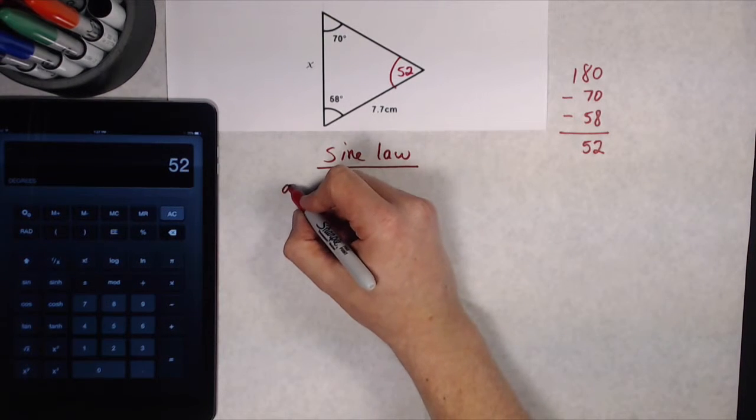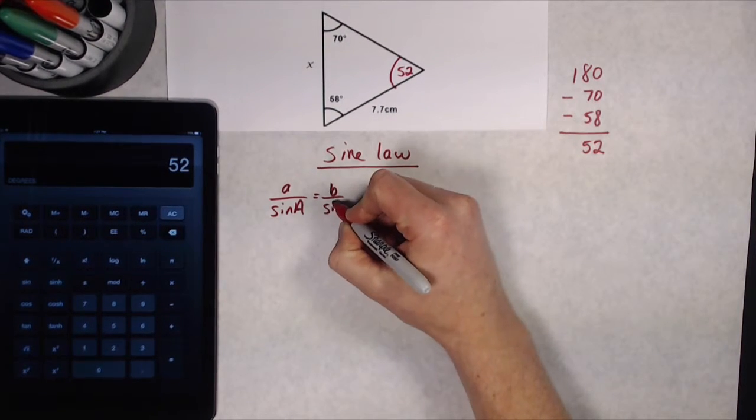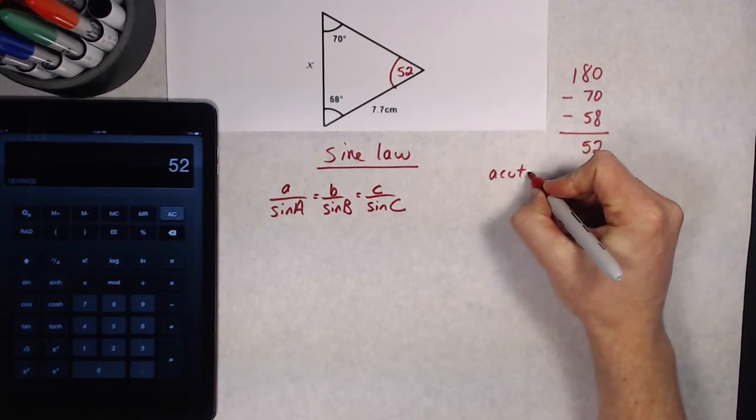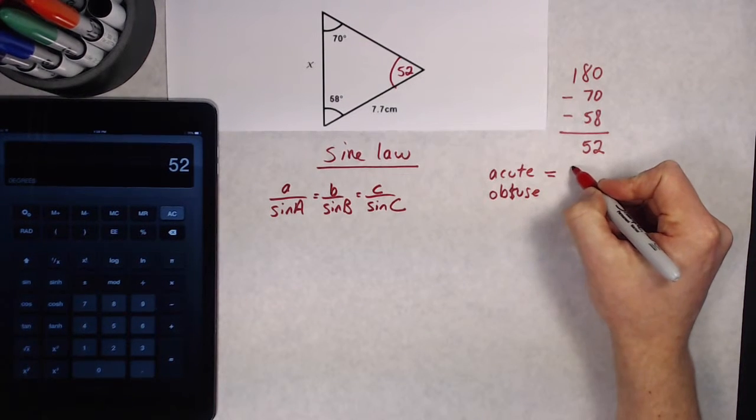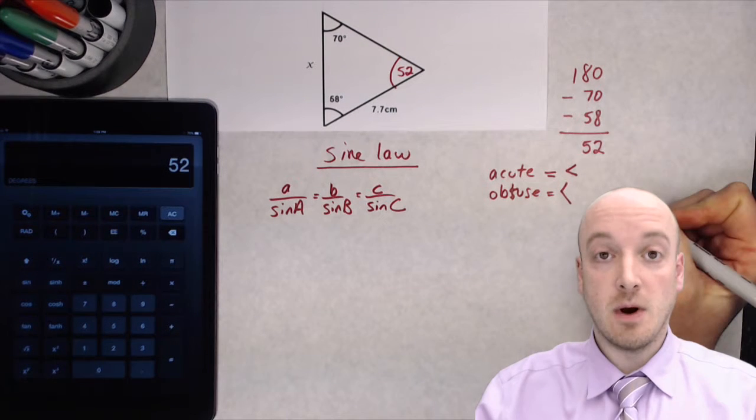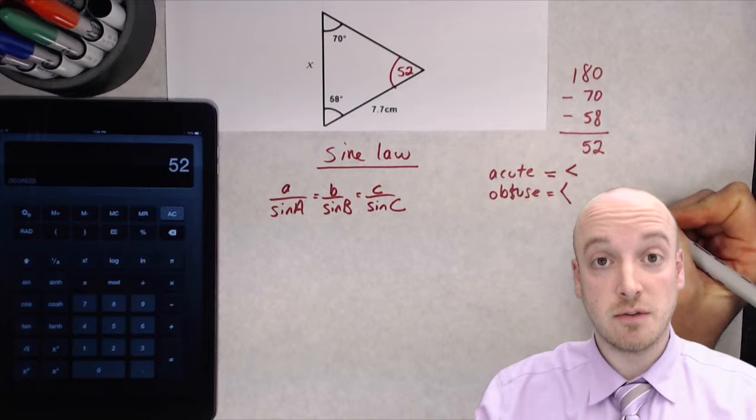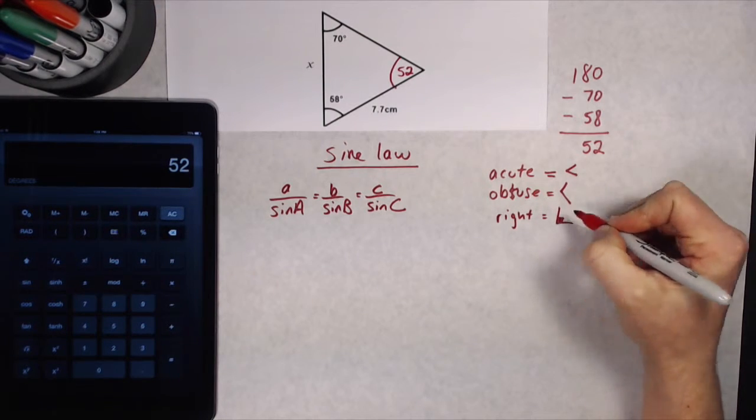Now sine law has three parts, but I can only use two of them at any given time. So I'm going to write out the formula. Then I'm going to have to fill in some numbers to figure out which two fractions I'm going to use. I have to remember, am I dealing with acute angles only, or do I have an obtuse angle in here somewhere? Acute angles are smaller than 90. Obtuse angles are bigger than 90. Now watch in the next example what we do with those obtuse angles. There's a really important trick that you need to know if you're trying to solve for an obtuse angle using sine law. So stay tuned for that. And remember, a right angle would look like that.